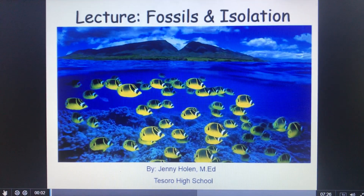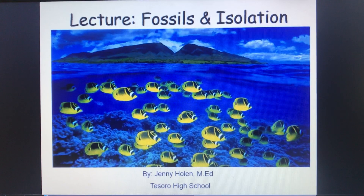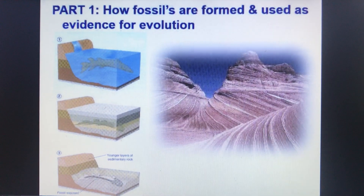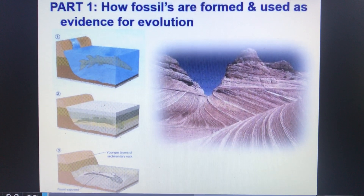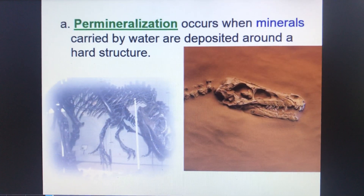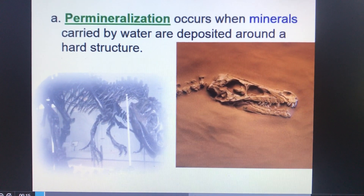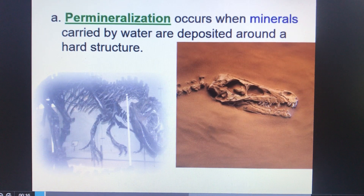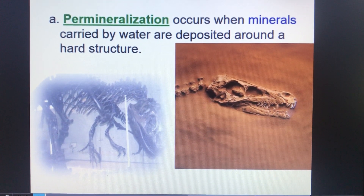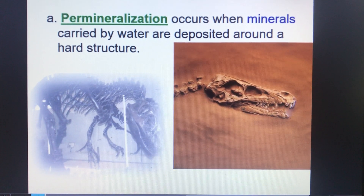Welcome to Ms. Holland's lecture on fossil and reproductive isolation. Part one, we will talk about how fossils are exactly formed. The first type of fossilization is known as permineralization, which is when minerals are carried by water or deposited inside the bones themselves, causing them to turn into rock.